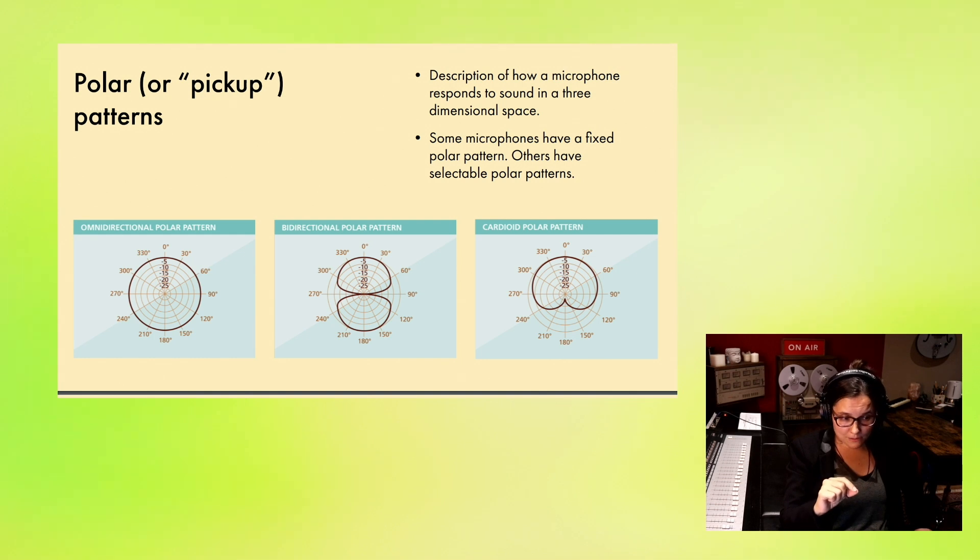The next polar pattern is bidirectional, or figure eight is another term that you'll hear used for that. You can see where the term figure eight comes from, as it looks like an eight there in the diagram. What this polar pattern does is it picks up equally from the front and the rear of the microphone, but rejects from the sides. We're going to hear an audio example of this in a moment, if this is at all confusing.